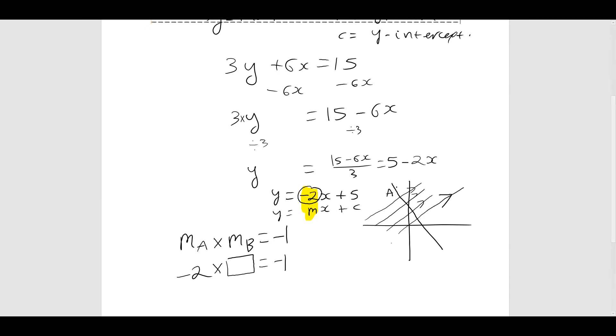Now to get what is in that box, that mB, the gradient of the perpendicular line, I just have to divide both sides by minus 2. I simply do minus 1 over minus 2. A minus divided by a minus is a plus, so I have plus 1 over 2, or plus one half.